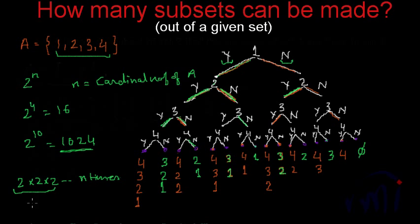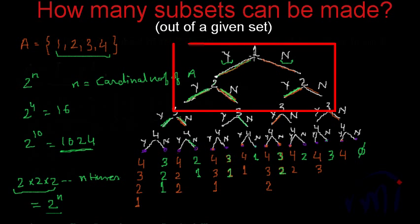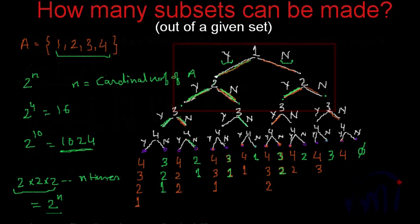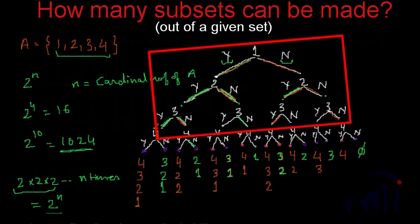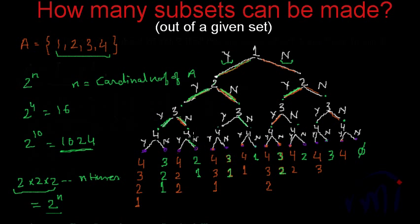So for n elements, there are 2 multiplied by 2 multiplied by 2, n times, giving 2 to the power n total possibilities. For one element you have 2 possibilities; for two elements you get 4 subsets; for three elements you get 8 subsets — as confirmed by counting 8 nodes at that level of the tree.